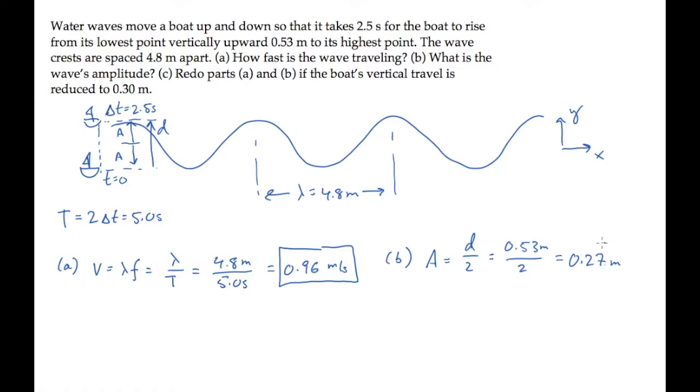Part C asks what happens if the distance d is reduced to 0.3 meters. The wave speed is unaffected by the distance d, or the amplitude. So that remains 0.96 meters per second. The amplitude, however, is reduced to half of 0.30 meters, which is 0.15 meters.